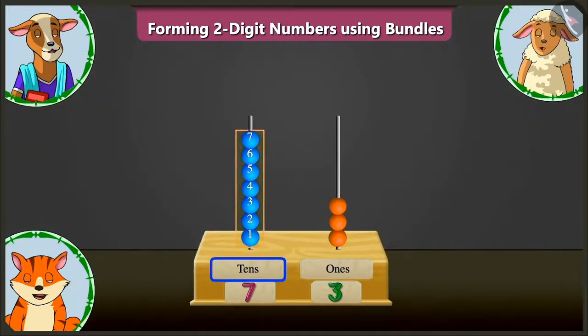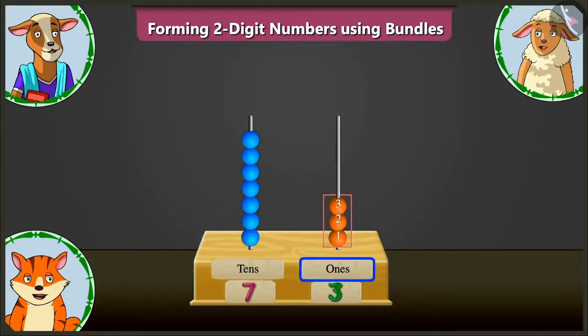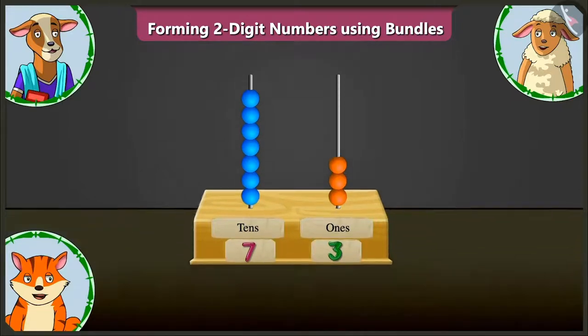Now, here, in the tens box, seven tens means seventy. And in the ones box, three ones means three. So, adding seventy and three makes it number seventy-three. Absolutely correct.